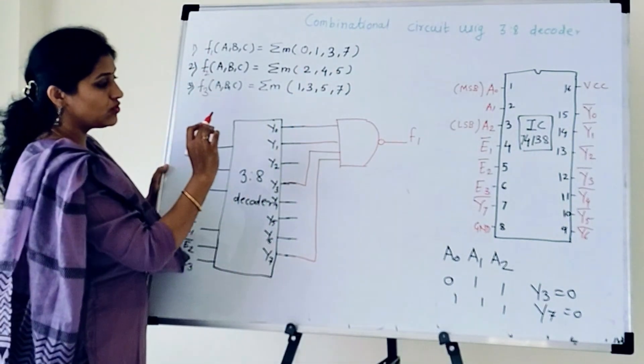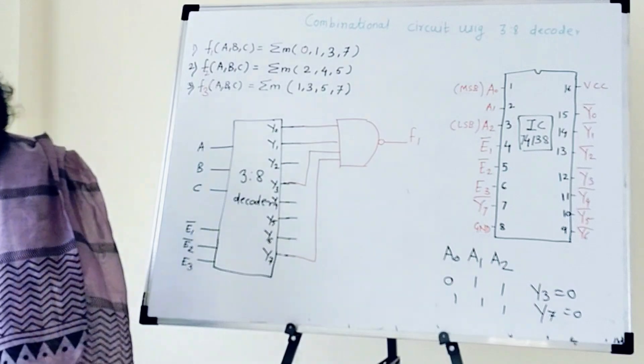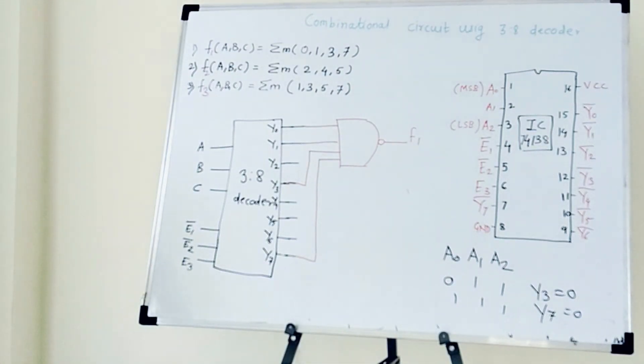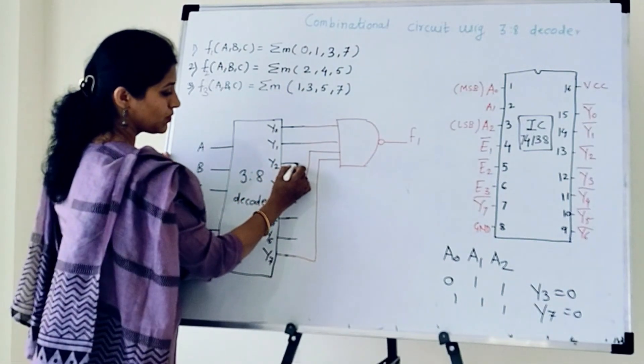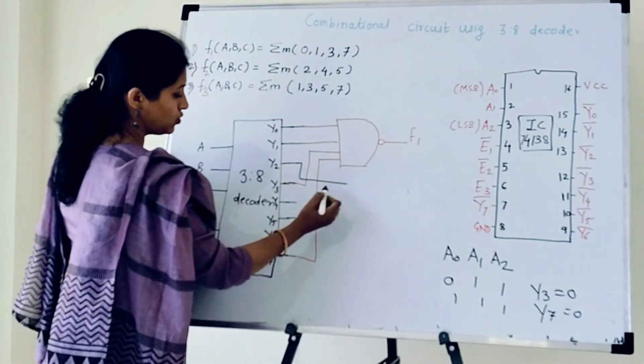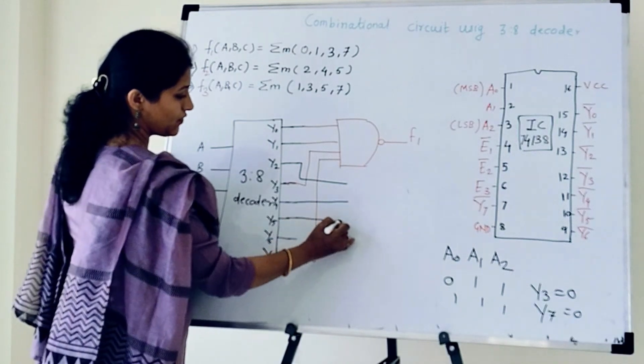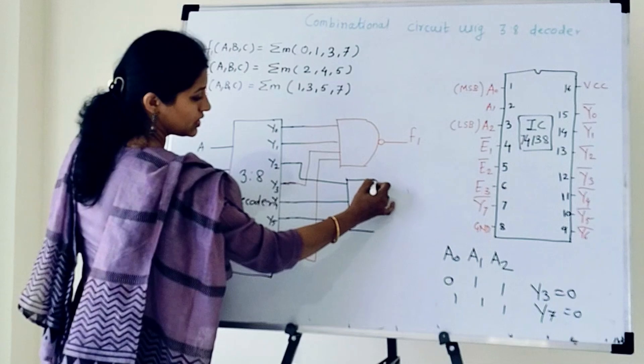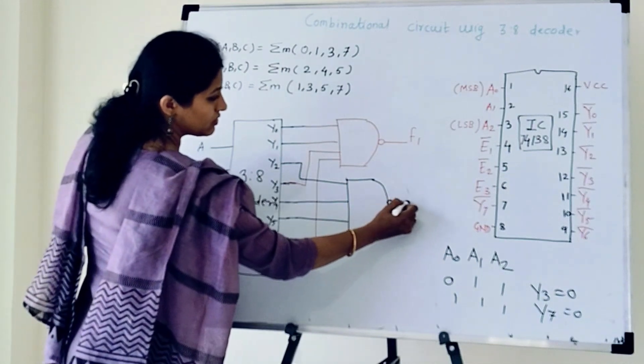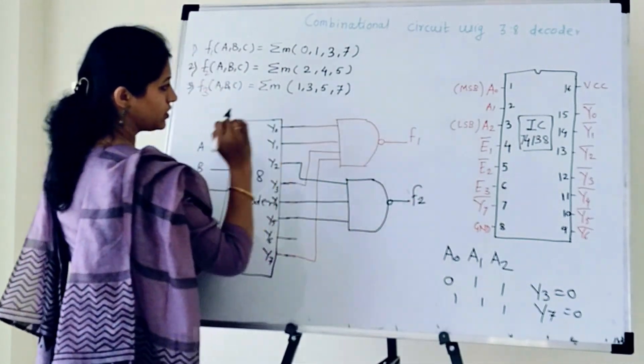Second is 2, 4 and 5. And I will connect it to inputs of another NAND gate. And here it will generate F2.